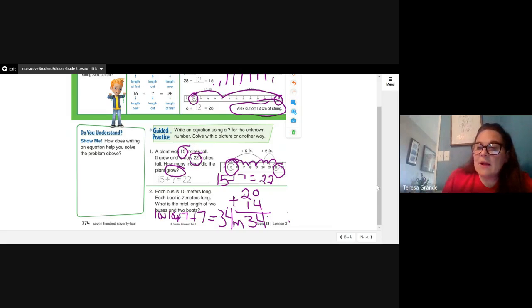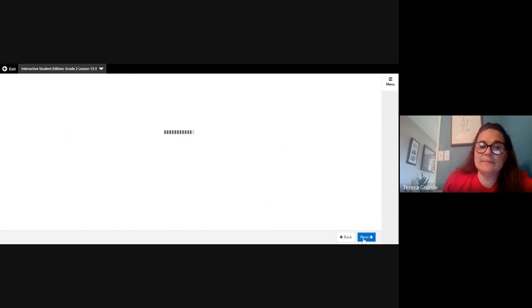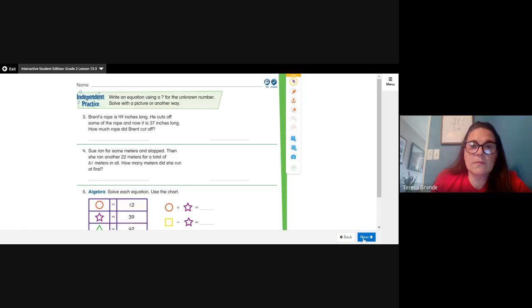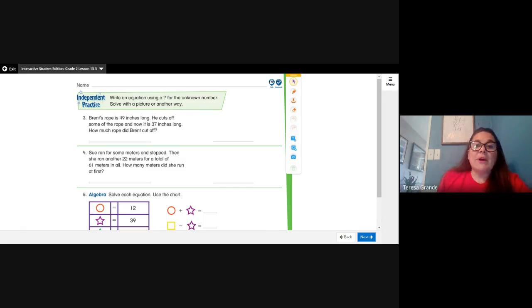Alright, let's take a look at the next page. Brent's rope is 49 inches long. He cuts off some of the rope and now it is 37 inches long. How much rope did Brent cut off?